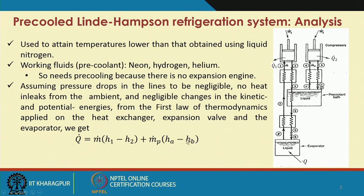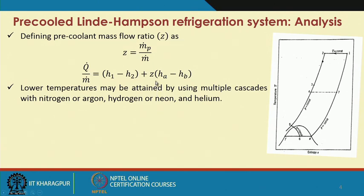HA and HB are the enthalpies at points A and B. This additional term accounts for the pre-cooling. We rearrange the equation and define another term — the pre-coolant mass flow ratio — which is the ratio of the pre-coolant mass flow rate to the total mass flow rate in the main system. We put Q/ṁ as the heat removed per unit mass of the actual process fluid. If we want to achieve lower and lower temperatures, we can use multiple cascades — not only one auxiliary system but another auxiliary system to get still further cooling.